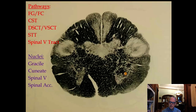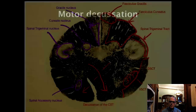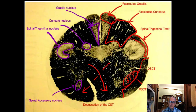What we're seeing here is a continuation of the spinal accessory nucleus — cranial nerve eleven — supplying the trapezius and sternocleidomastoid. The most important thing here is that we're at the level of the decussation of the corticospinal tract.